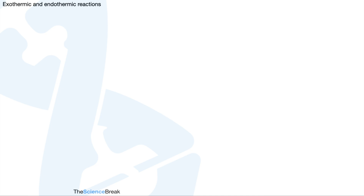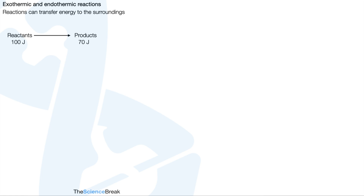Exothermic and endothermic reactions. Reactions can transfer energy to the surroundings. Imagine we have some reactants with 100 joules of energy in their bonds. We produce some products which have 70 joules of energy in their bonds. 30 joules of energy have been transferred to the surroundings. This is an exothermic reaction.